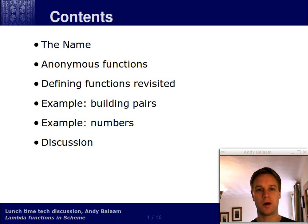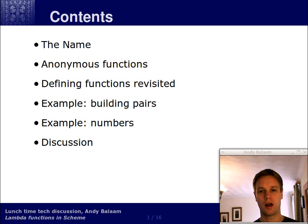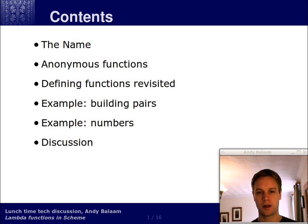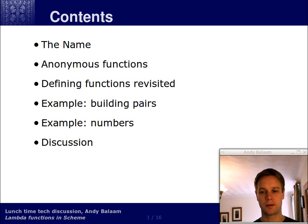I'm going to talk about why they're called Lambda functions, what they are — which is anonymous functions, meaning functions with no name. I'm going to look again at defining functions, which we looked at in previous videos in the series, in a new way. Then I'm going to take you through two examples of some of the massive power you have in your hands when you're using functions in Scheme. You can do really fundamental, deep things.